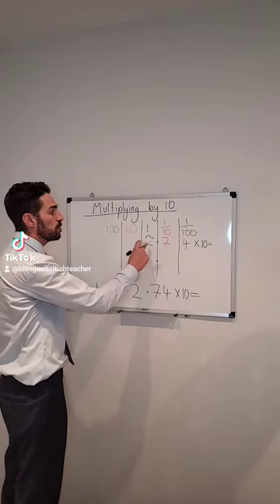Okay, so let's start with 2.74 multiplied by 10. 2.74 multiplicado por 10.